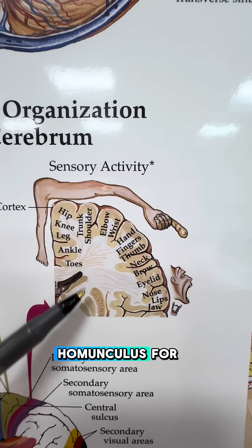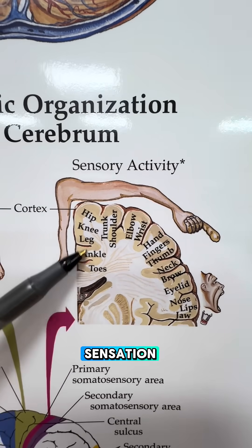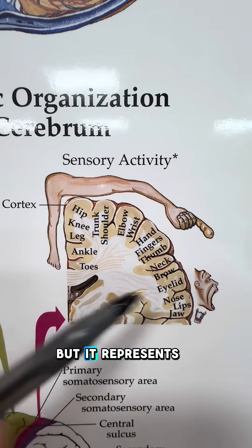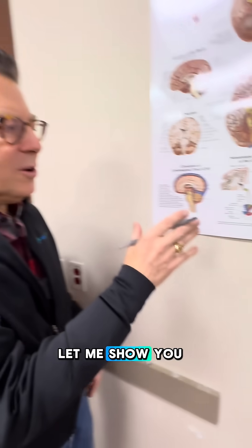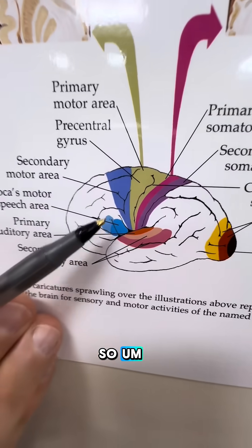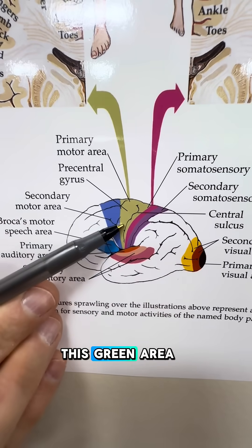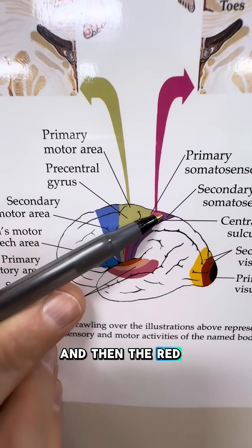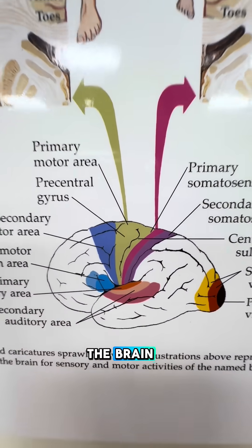There is also a homunculus for our sensory cortex — the part of the brain that helps us with sensation — and you can see how it's represented the exact same way as on the motor cortex, but it represents sensory information. Let me show you again on here. This is a side view of our brain. This green area right here is the motor cortex, and the red area is our sensory cortex, so it gives you a feeling of where it is on the brain.